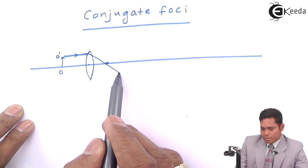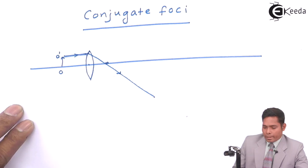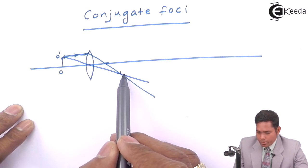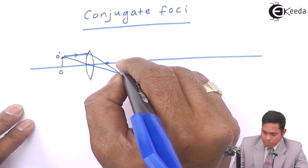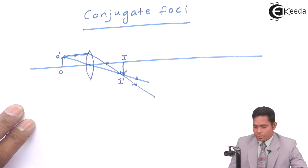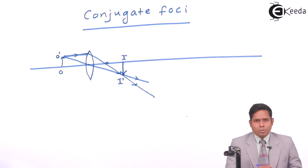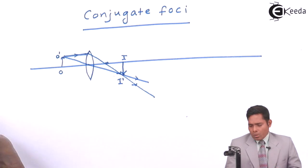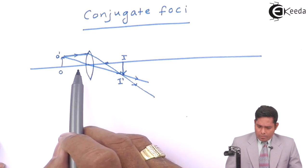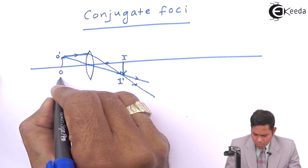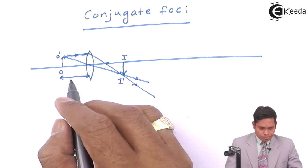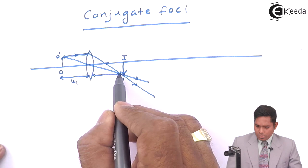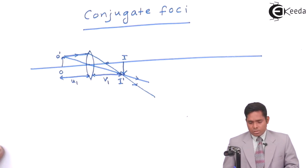The ray from the focus passes through after refraction, and where the two rays meet gives us the image position, which I call I'. The object distance is labeled u1 and the image distance is labeled v1.